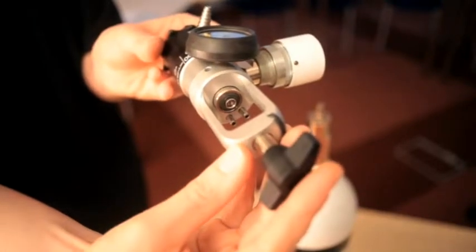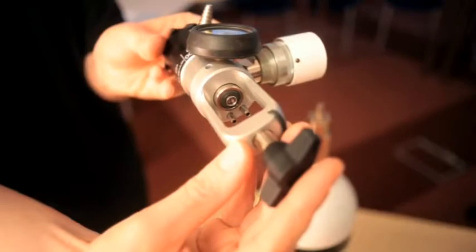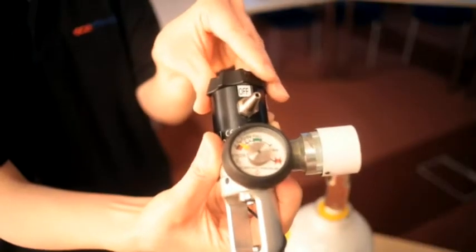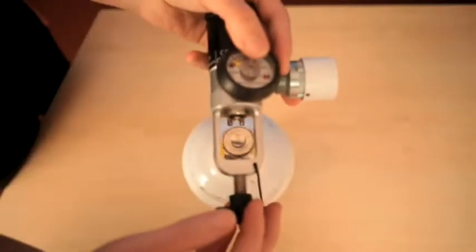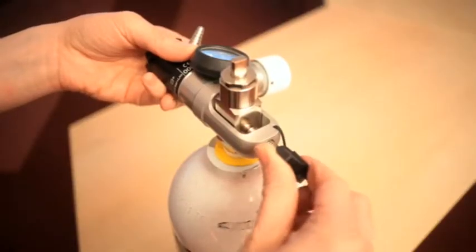Check that the cylinder valve connection and inlet O-ring are clean and in good condition. The flow setting should be set to off. Attach the regulator to the cylinder and tighten the yoke firmly by hand.